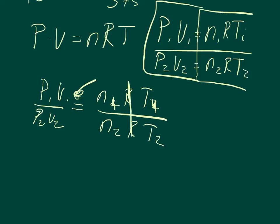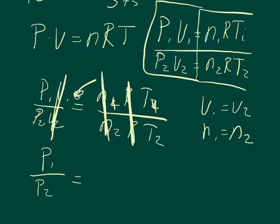First of all, R is the same, so it cancels itself out. Then the second thing we do, we look back at the problem, and we see what other things remain constant. It says if the gas is heated at a constant volume, so we know that V1 equals V2, so these cancel out. If the gas is heated at a constant volume, that means that the number of moles N1 equals N2, because there is no new gas added, it's just heated. So that cancels itself out. So we end up with the initial pressure over the final pressure equals the initial temperature over the final temperature.